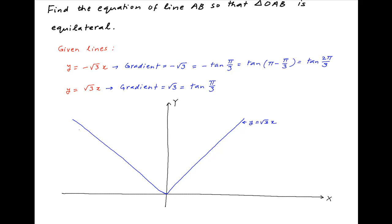And y equals minus root 3 times x is a line with the negative gradient equal to minus root 3.